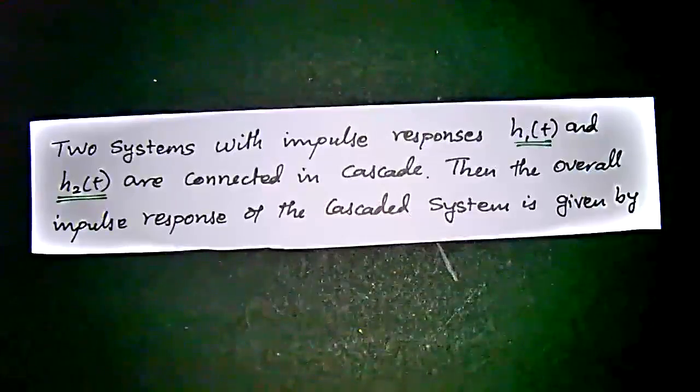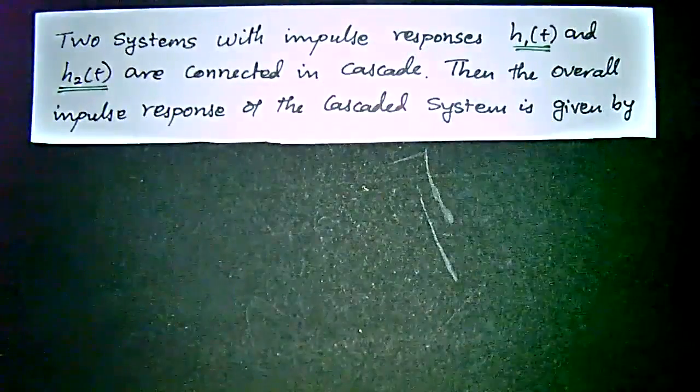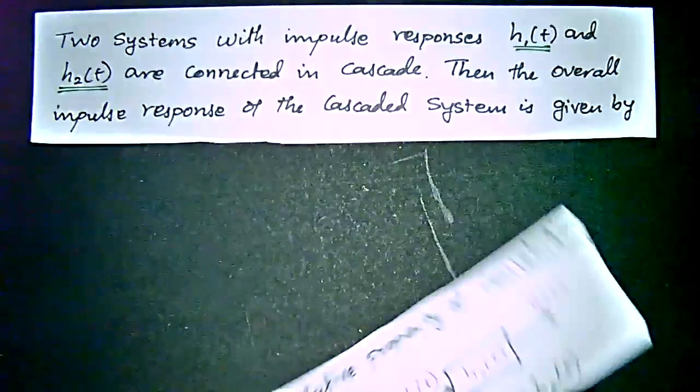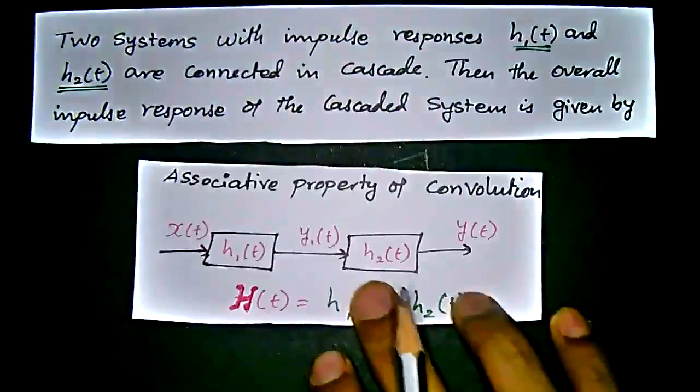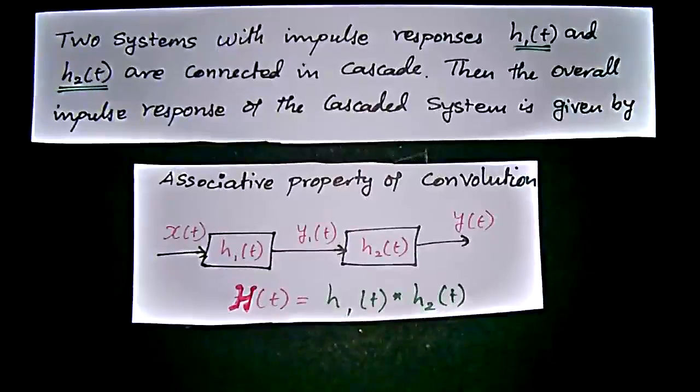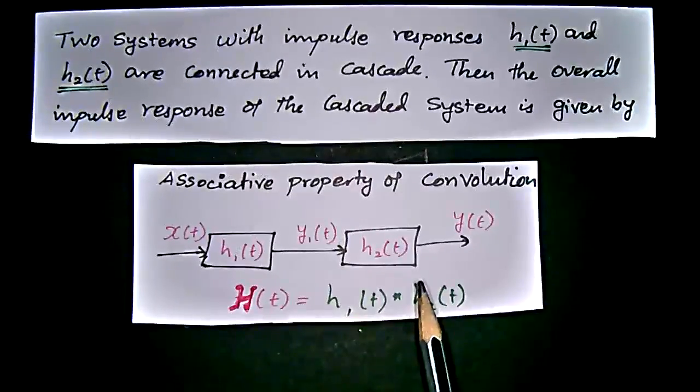For these constraints, we have to know the value of these properties which are already derived in convolution. So we have the associative property of convolution.